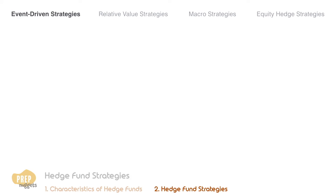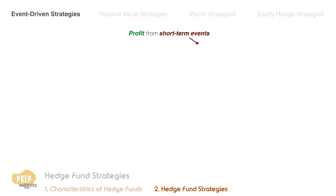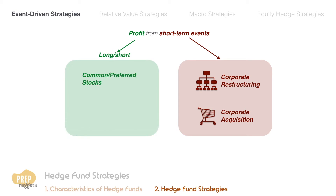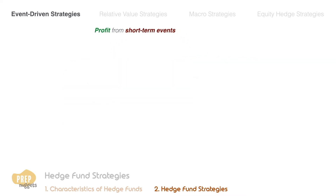Firstly, event-driven strategies seek to profit from short-term events, typically based on a corporate restructuring or corporate acquisition. Hedge funds typically profit from such opportunities through long and short positions in common and preferred stocks, as well as debt securities and options of the companies involved. Event-driven strategies can be further sub-categorized as follows.